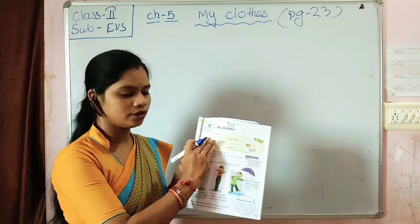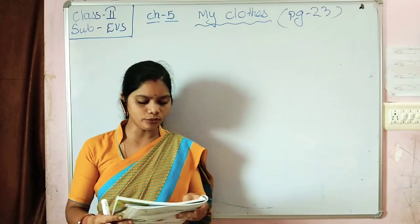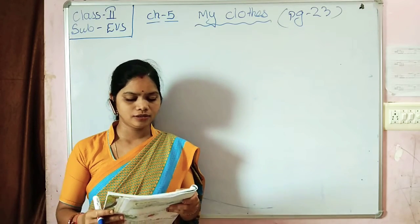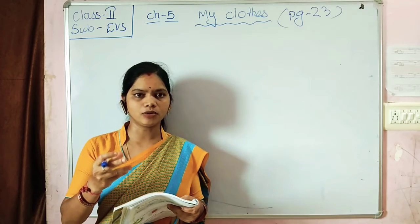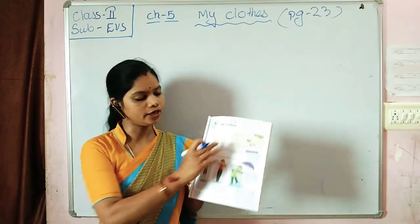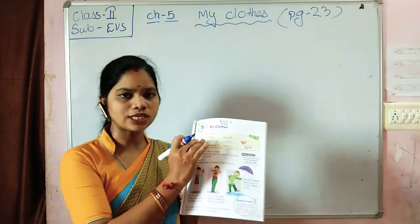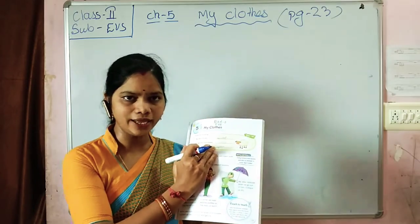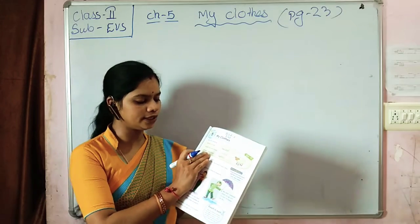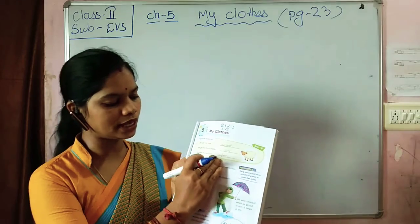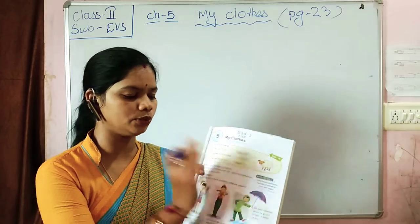Now let's name the following. We use a raincoat in rain — so the answer is raincoat. We get wool from sheep. You write here 'wool.' We wear uniform to school, so you write here 'uniform.'